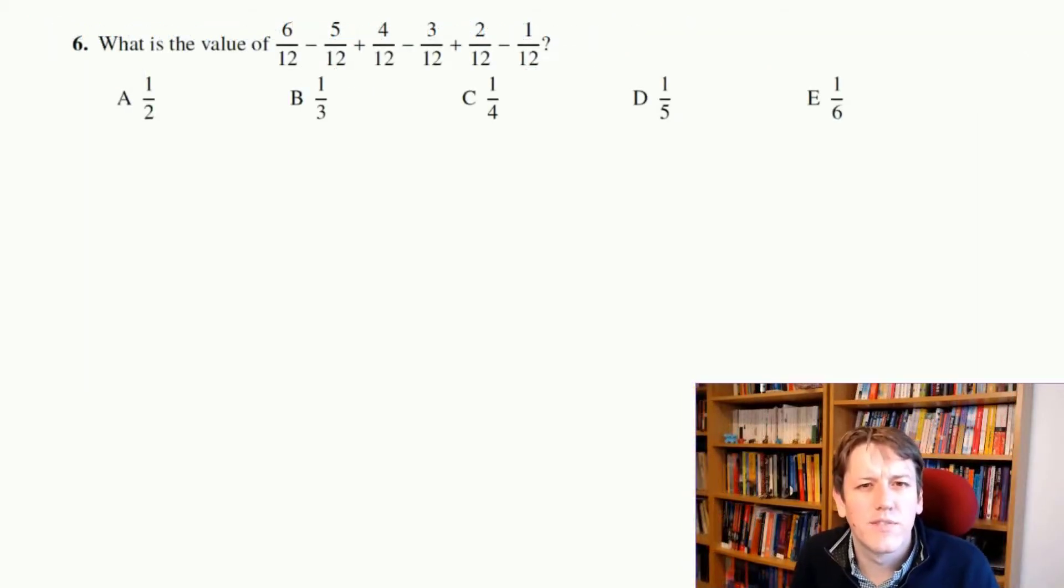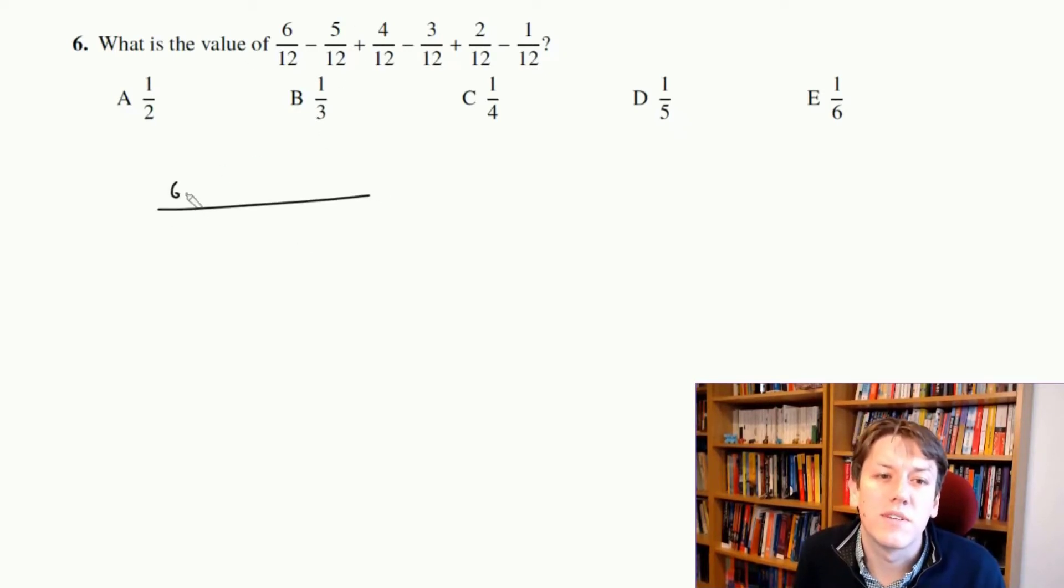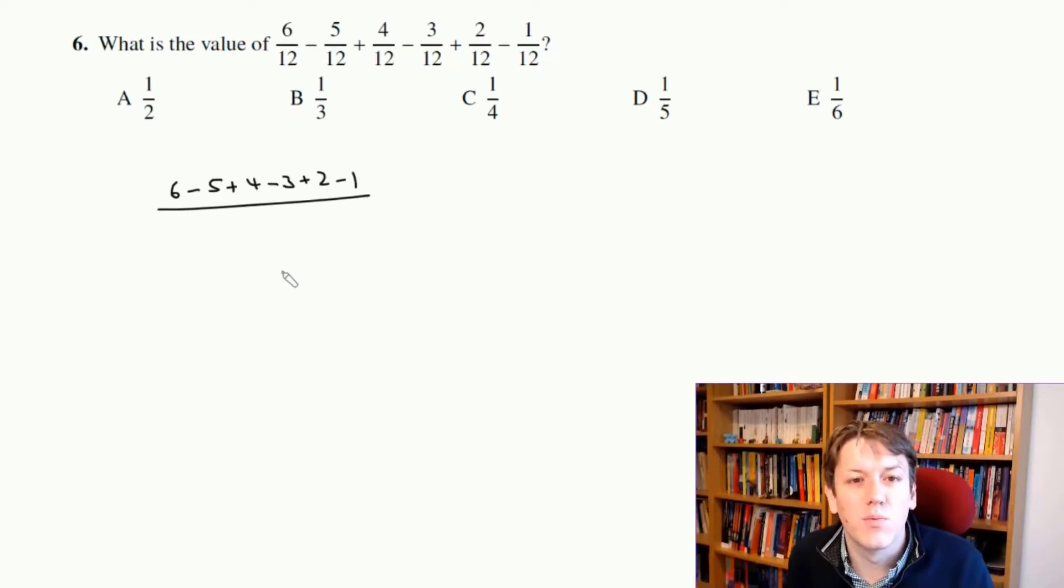So we have to work out the value of this expression. Everything's already over a common denominator, so this is just the same as 6 minus 5 plus 4 minus 3 plus 2 minus 1 all over 12. Remember, BIDMAS applies here.